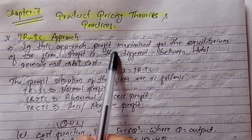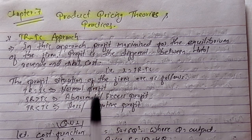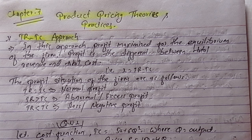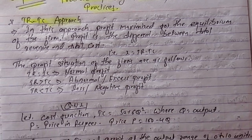In this approach, profit is maximized for the equilibrium of the firm. Profit is the difference between total revenue and total cost. Profit maximization is very important. If we have the equilibrium of the firm at equal value, then we will maximize the profit. We will make the formula for profit: profit equals TR minus TC.